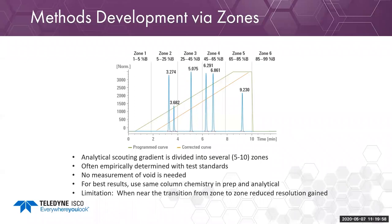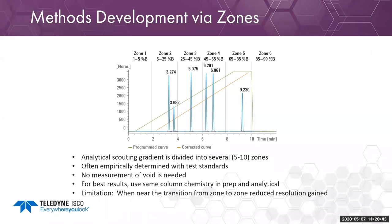This zone-based approach is usually calibrated in the lab by running your analytical system and correlating it to your prep system. Importantly, for this correlation to work you need to use the same column chemistry so that selectivity matches between prep and analytical. One limitation is that if you're at the edge of a zone, you start to lose optimal resolution and separating power.